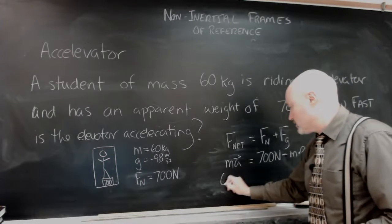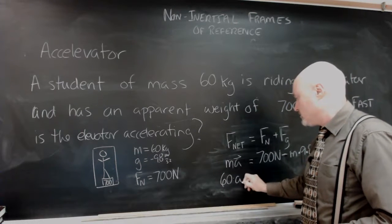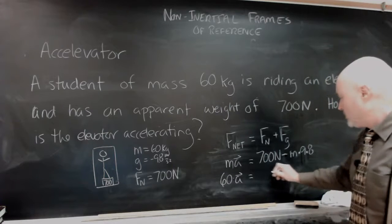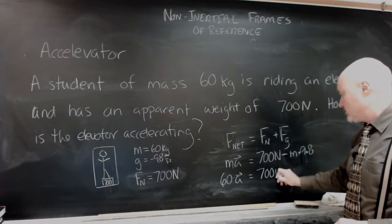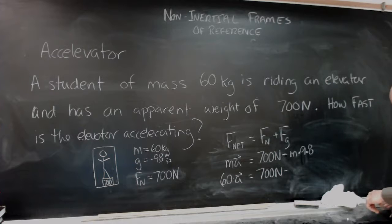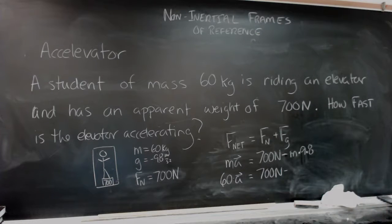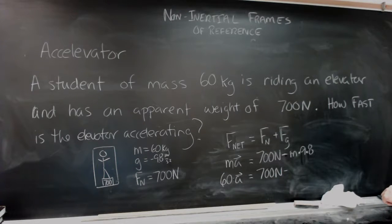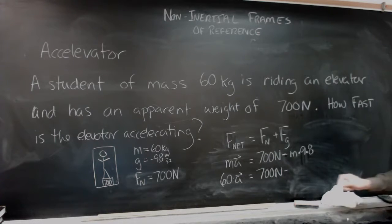And I suppose I could have thrown a 60 in here earlier and over here. And 60 times 9.8 is 588.